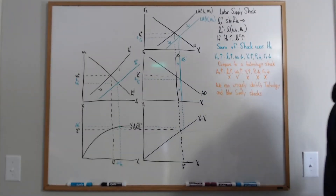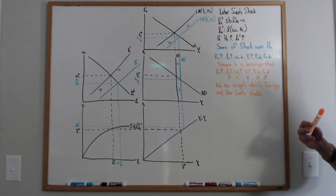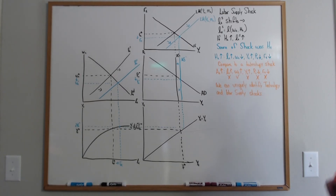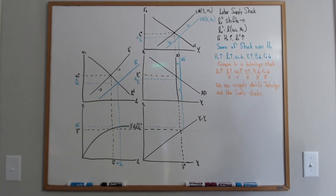Practice this just like you practiced the other type of shock. Work on this over and over; try not to look at your notes or rewatch the videos — just work through it on your own until you get it right. It shouldn't take very long because there really aren't very many movements. If you watched the video where I set this up and explained how aggregate demand is derived, and you remember the relationship between prices and the LM curve — basically, if prices ever drop, the LM curve is going to shift out.